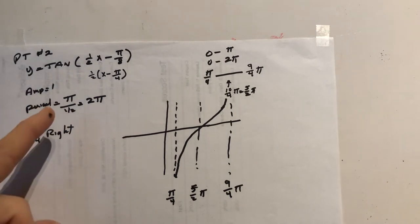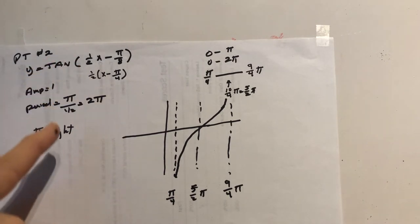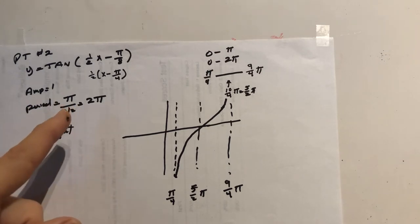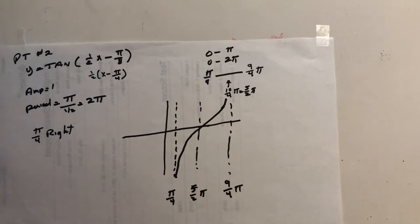The period is normally pi. We have to divide by half. Pi divided by half is 2 pi, so our period is twice as big instead of pi.